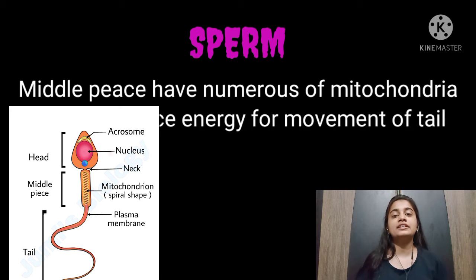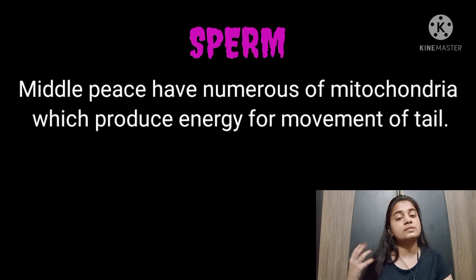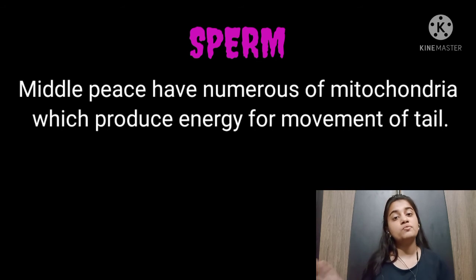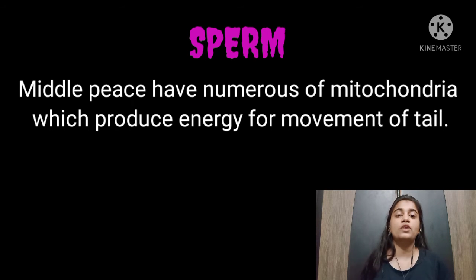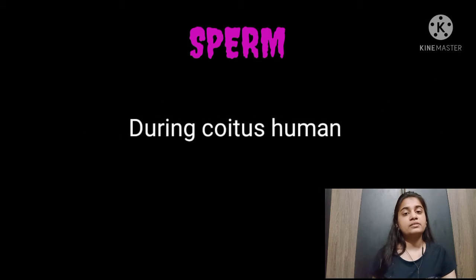These mitochondria provide energy to the sperm. The sperm motility — how the sperm moves — is powered by the tail with energy from the mitochondria.